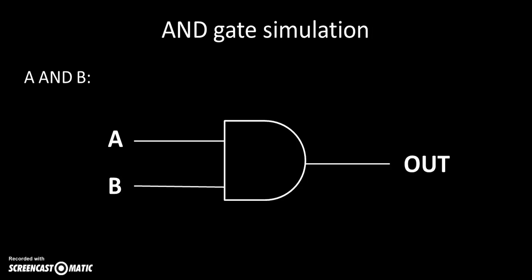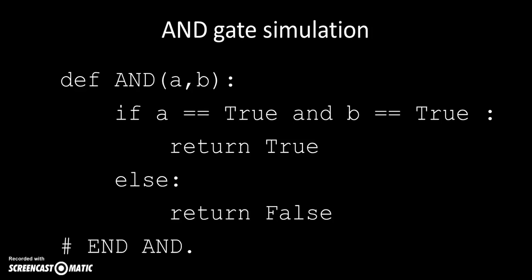If I wanted to write that in Python, I'd create a function called AND that takes in two values A and B. If A is true and B is true, then return true, else return false. So unless they're both true, it's going to return false. If they're both true, it'll return true. That's the AND gate simulated.